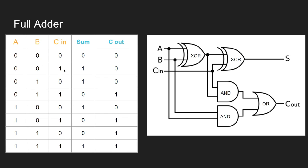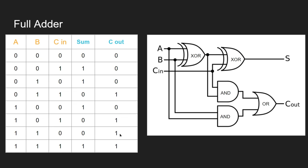If we've got 0 plus 0 plus 1, that equals 1 — a SUM of 1 with no carry. If 0 plus 1 plus 0, that's just 1 with nothing to carry. If two of them are on — for instance B and C, or A and B — then 1 plus 1 equals 2, which is 1, 0 in binary, so we carry 1 and the SUM is 0. And if all of them are on — 1 and 1 and 1 makes 3, or 1, 1 in binary — you output 1 to the SUM and also carry 1 as well.